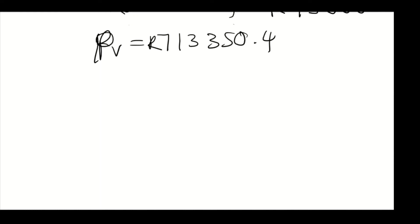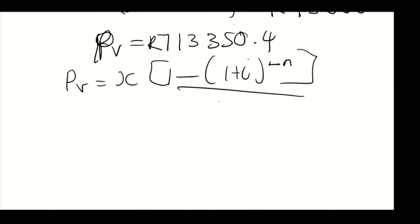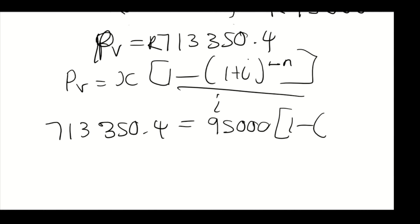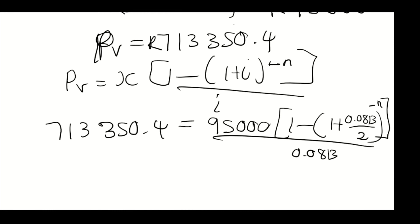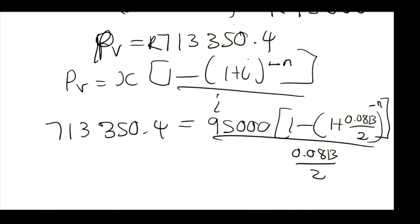We now substitute into the PV formula: 713,350.4 = 95,000 × [1 - (1 + 0.0813/2)^(-n)] / (0.0813/2). The interest rate used here is 8.13% half-yearly, so i = 0.0813/2 and m = 2 since it is compounded half-yearly.